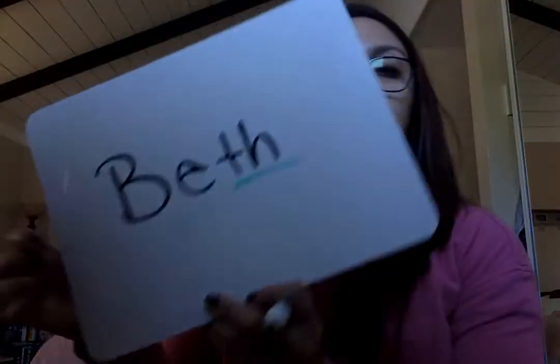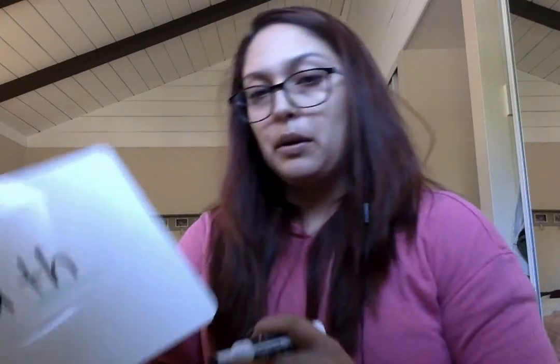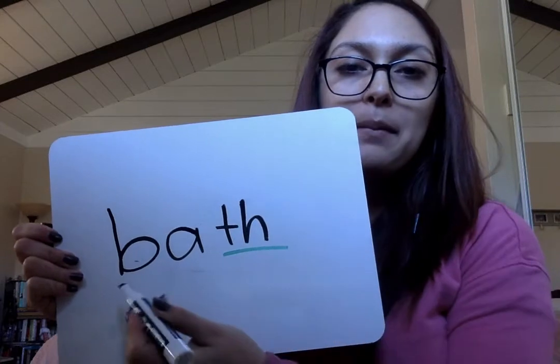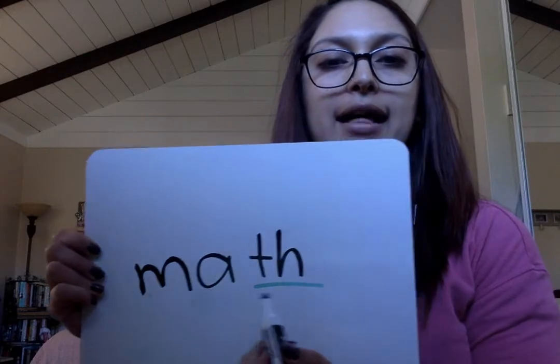Either way, your tongue should be between your teeth and you should be blowing out air. If I have the name Beth, it's important that I use a capital letter. It kind of lingers a little bit more — B-E-TH, Beth. I also could change to lowercase because it's not a name: B-A-TH — Bath. And one more: M-A-TH — Math.